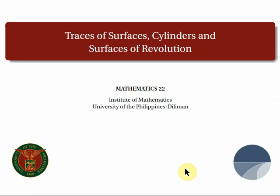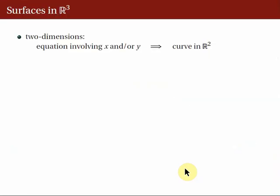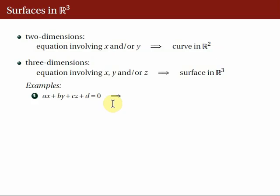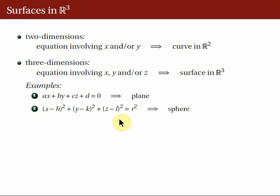Let's begin our discussion on traces. Recall that the graph of an equation involving x and/or y is a curve in R2, while the graph of an equation involving x, y, and/or z is a surface in R3. Some examples of surfaces are: number 1, given AX + DY + CZ + D = 0, this is a linear equation in 3 variables, and we know the graph is a plane. Another example involves x, y, and z, where the graph is a sphere centered at (h, k, l) with radius r.